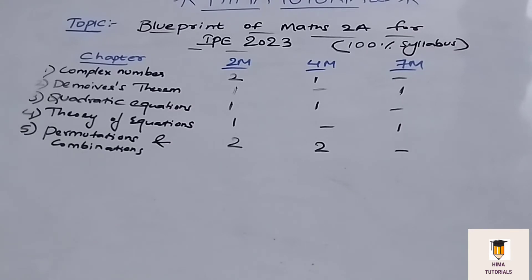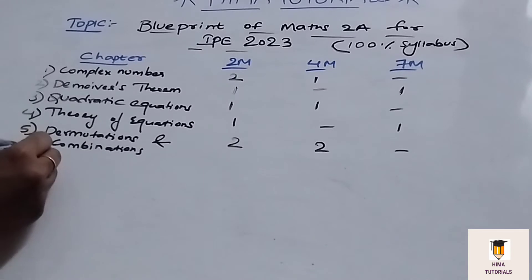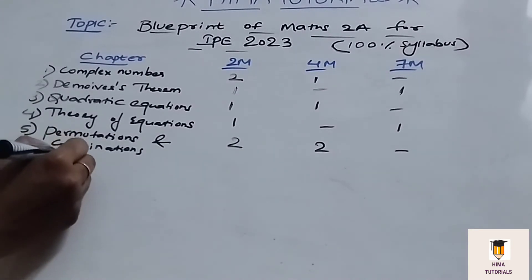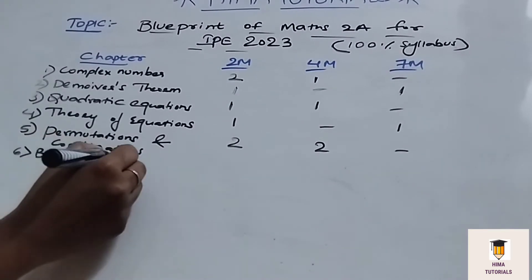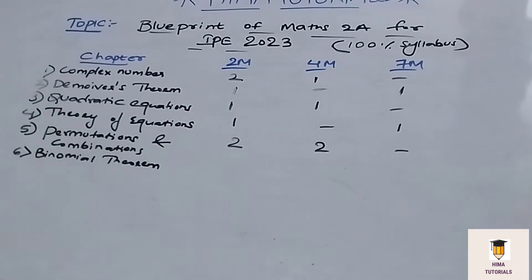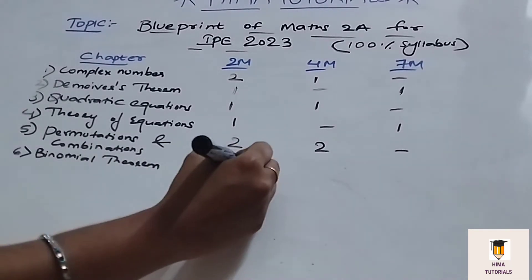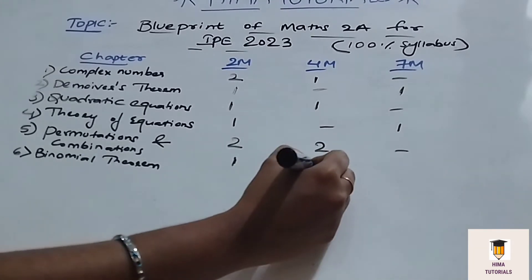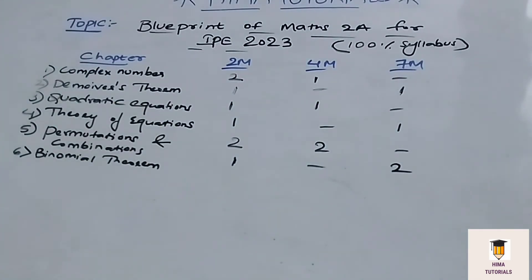In Permutations and Combinations, we will get 2 two-mark and 2 four-mark questions. Coming to the next chapter, Binomial Theorem — in Binomial Theorem, we will get 1 two-mark and 2 seven-mark questions.